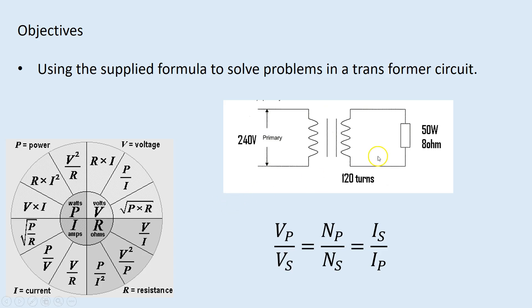In your test or exam, you're going to receive a question that looks something like this, but the values are going to be different. The principle for solving or completing the problem is the same. You're going to get the transformer equation and your formula wheel.